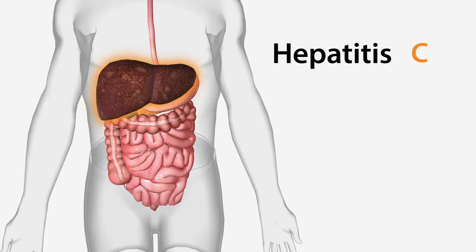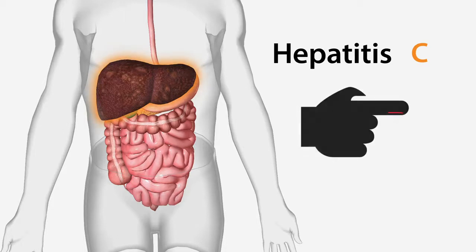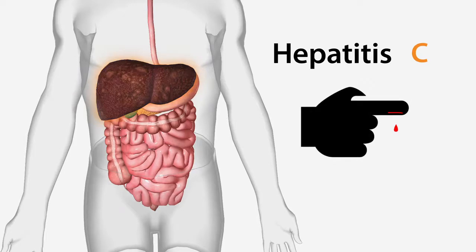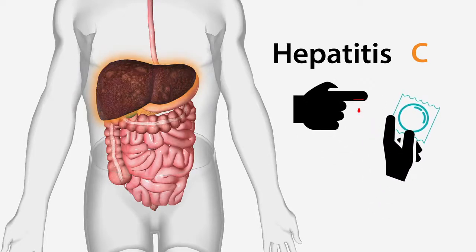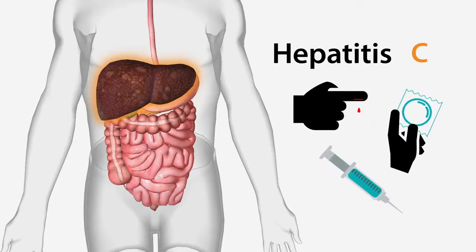As a blood-borne virus, the best way to prevent hepatitis C is by avoiding behaviors that can cause its spread, such as injection drug use. Hepatitis C is commonly transmitted through infected blood, unprotected sex, and contaminated or unsterile needles.